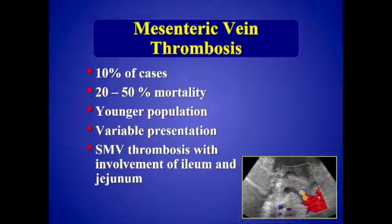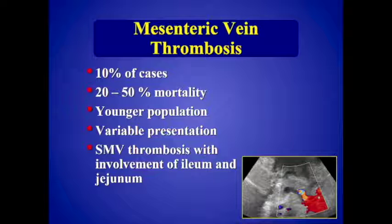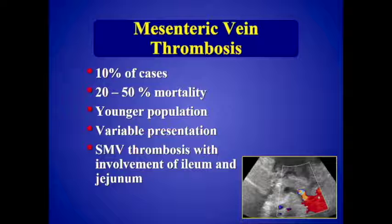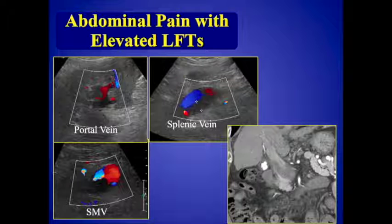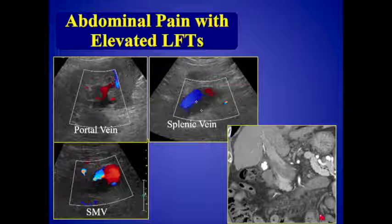Don't forget to look at the mesenteric veins. Venous thrombosis occurs in about 10% of cases of mesenteric ischemia with up to a 50% mortality, typically seen in a younger population with nonspecific and variable presentation. The typical course is thrombosis of the superior mesenteric vein with involvement of the ileum and jejunum. Here's an example of a patient with abdominal pain and elevated liver function tests showing thrombus in the splenic vein extending into the portal vein and the superior mesenteric vein, confirmed on CT angiogram.